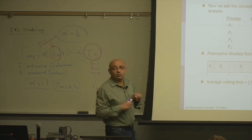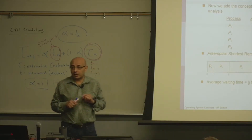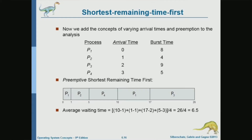We are introducing two new concepts. The first concept is the concept of arrival time — not all processes arrive at the same time, and the differences in arrival time here are significant. And we have the concept of preemption, where a higher priority process is going to preempt a lower priority process.